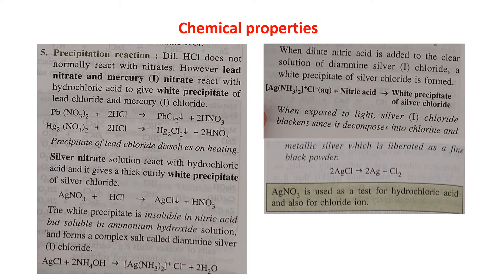Dilute HCl does not normally react with nitrates, but lead nitrate and mercury(I) nitrate are exceptions. Pb(NO₃)₂ + 2HCl → PbCl₂ (white precipitate) + 2HNO₃. Similarly, mercury(I) nitrate + 2HCl → Hg₂Cl₂ + 2HNO₃. Note that the precipitate of lead chloride dissolves on heating.